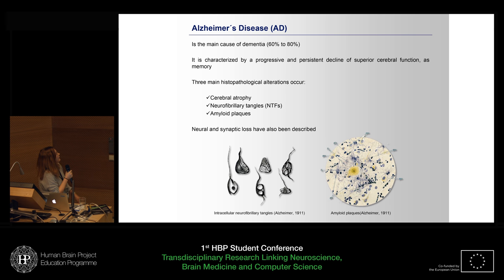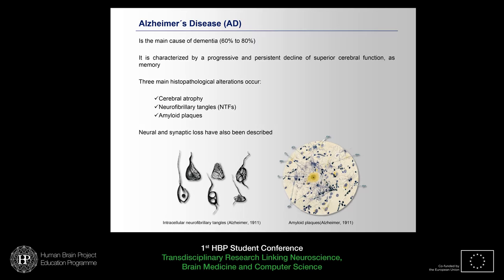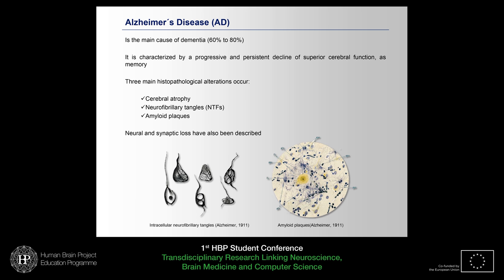I'll start with Alzheimer's disease. Alzheimer's disease is the main cause of dementia, accounting for 60 to 80% of cases. This disease is characterized by a progressive and persistent decline of superior cognitive functions, such as memory, orientation, and language. In the final stage, there is a lack of autonomy and in general a lack of social life.